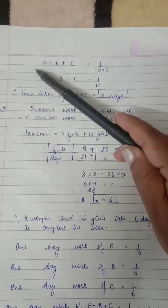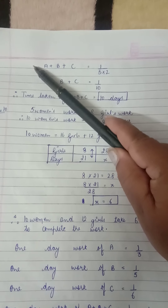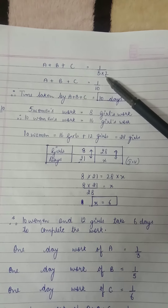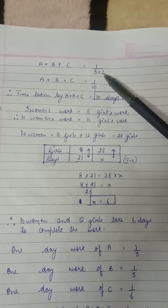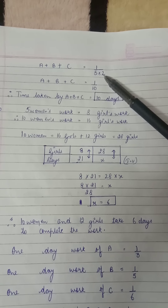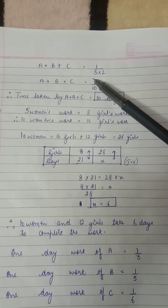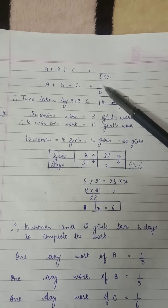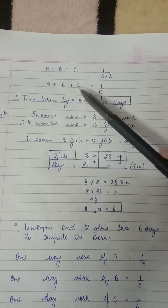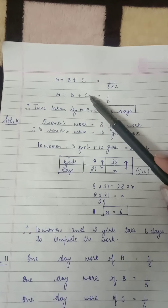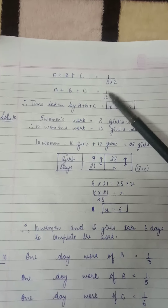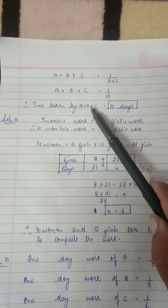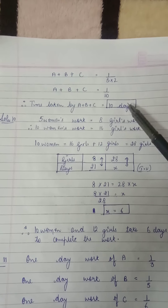There was 2 multiplied with A plus B plus C. Shifting that 2 to the other side means it divides, so taking it to the denominator: we had 1/5 on the right side, and with the 2 in the denominator that becomes 1/10. So one day work of A plus B plus C is 1/10, and finally the time taken by A plus B plus C is 10 days.